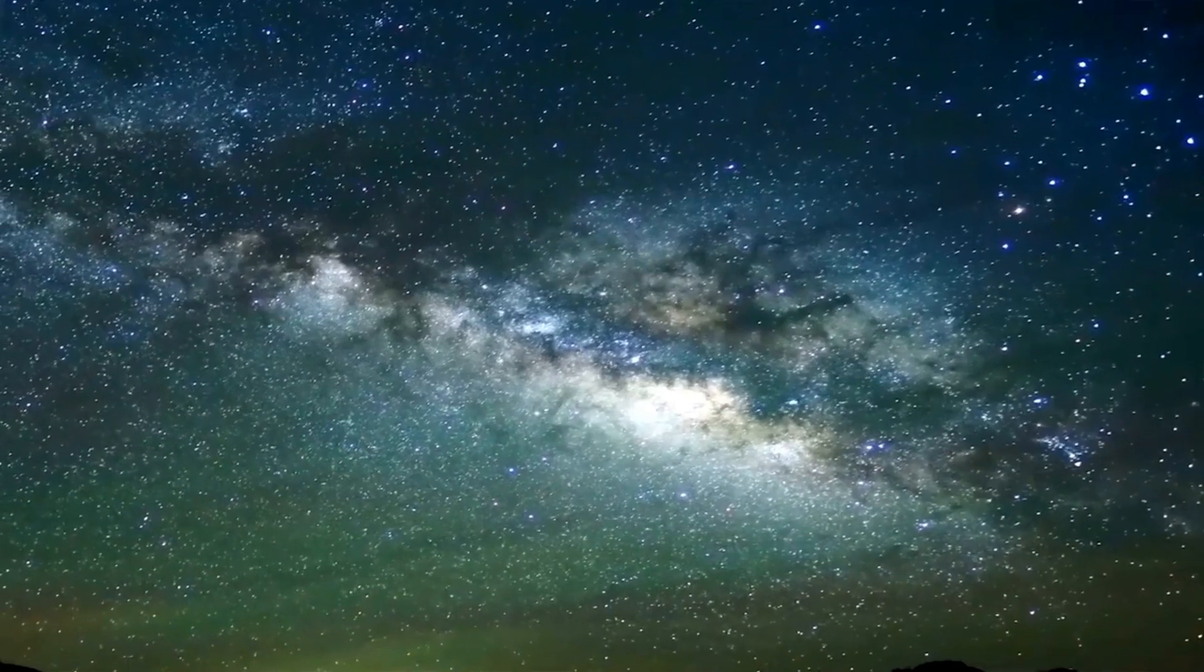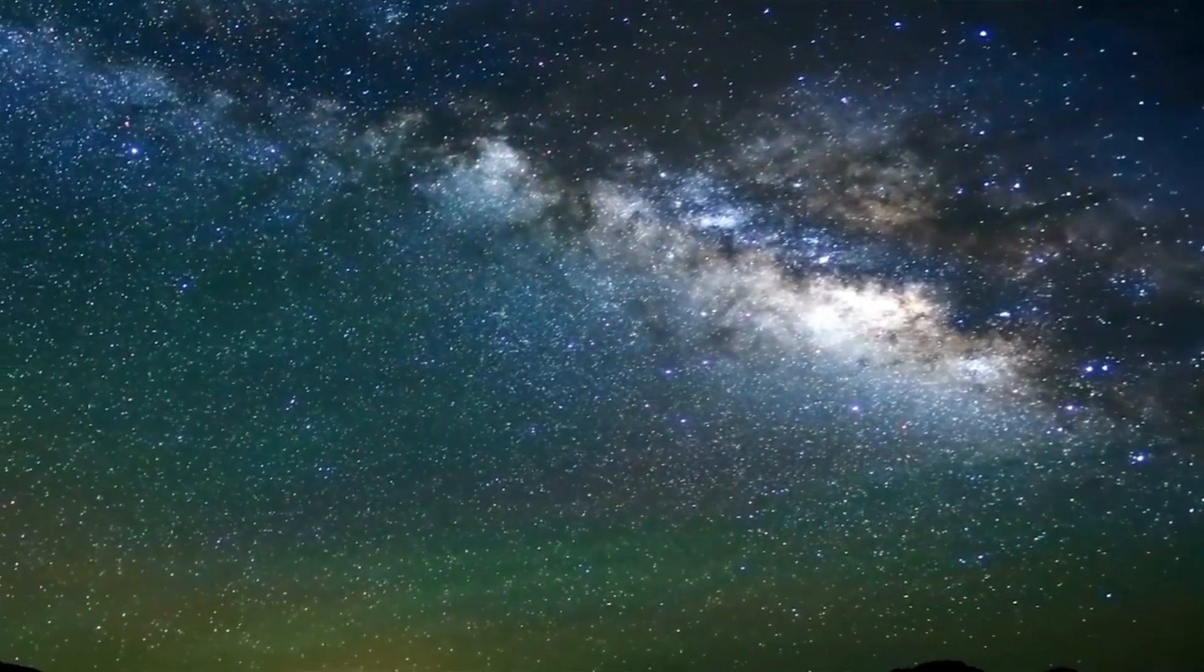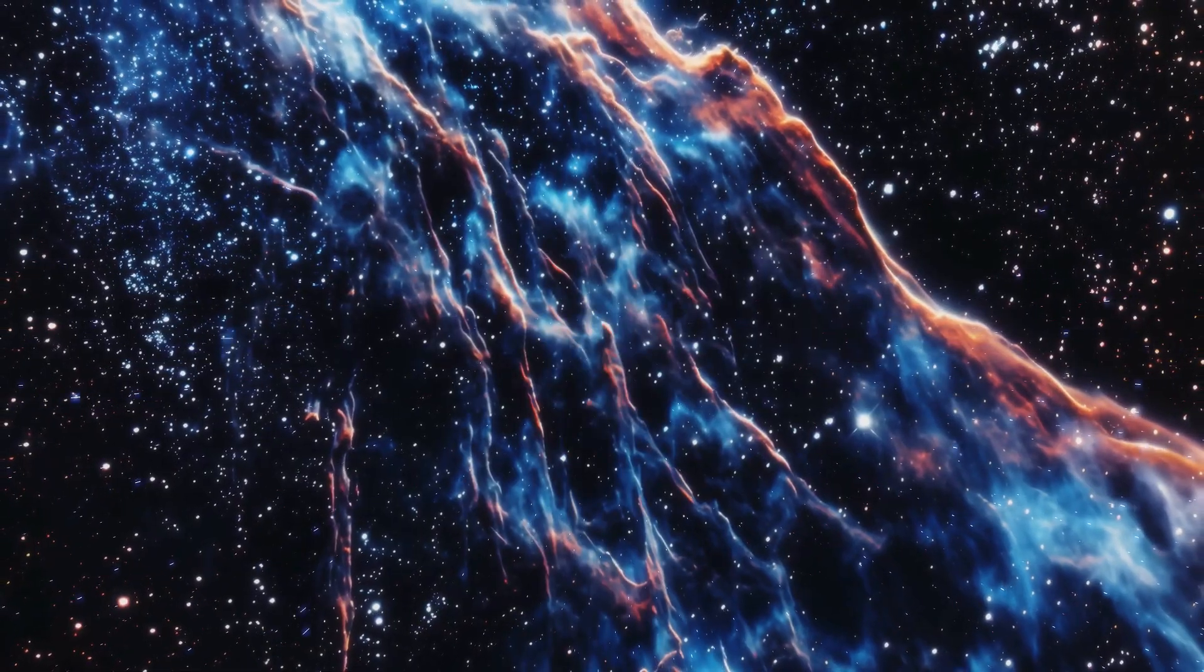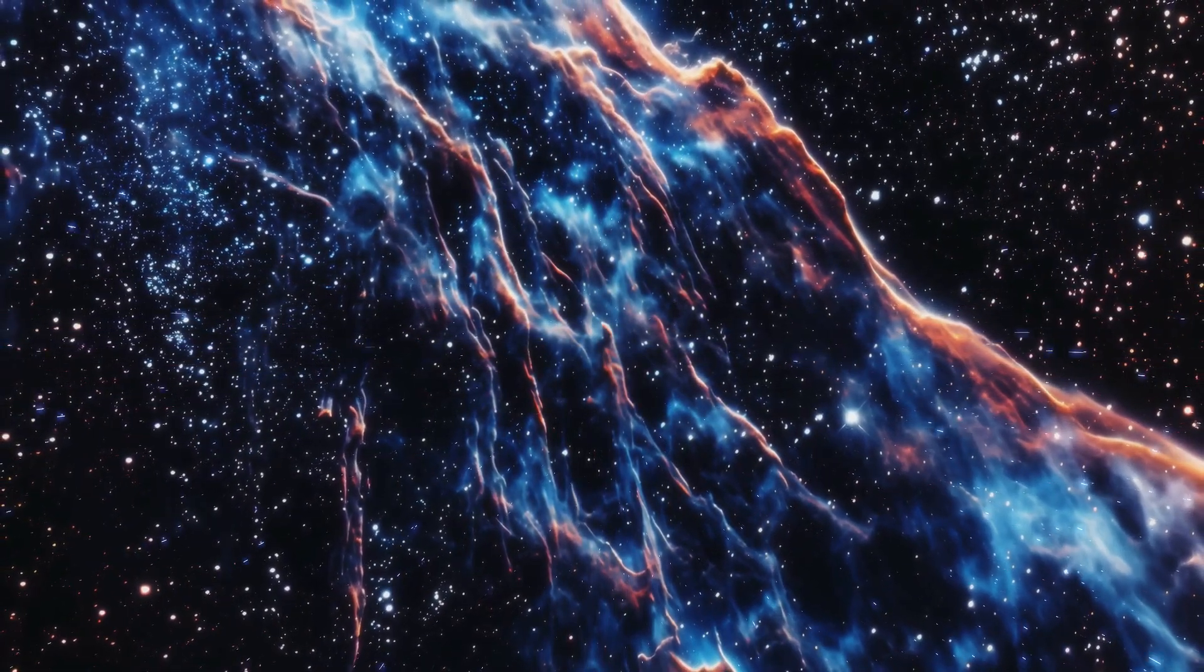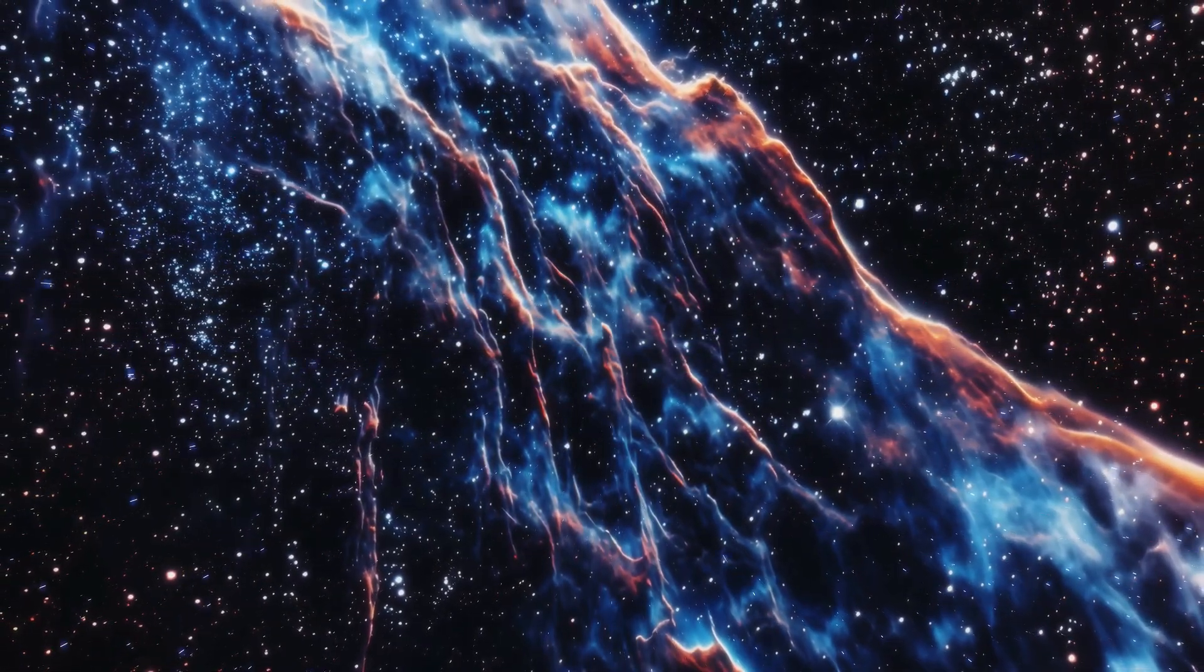Around the midpoint of the solar cycle, the Sun reaches solar maximum, a period of peak activity with the highest number of sunspots, solar flares, and coronal mass ejections, or CMEs. The magnetic field becomes extremely complex and tangled due to the constant twisting and shearing by differential rotation and convection.